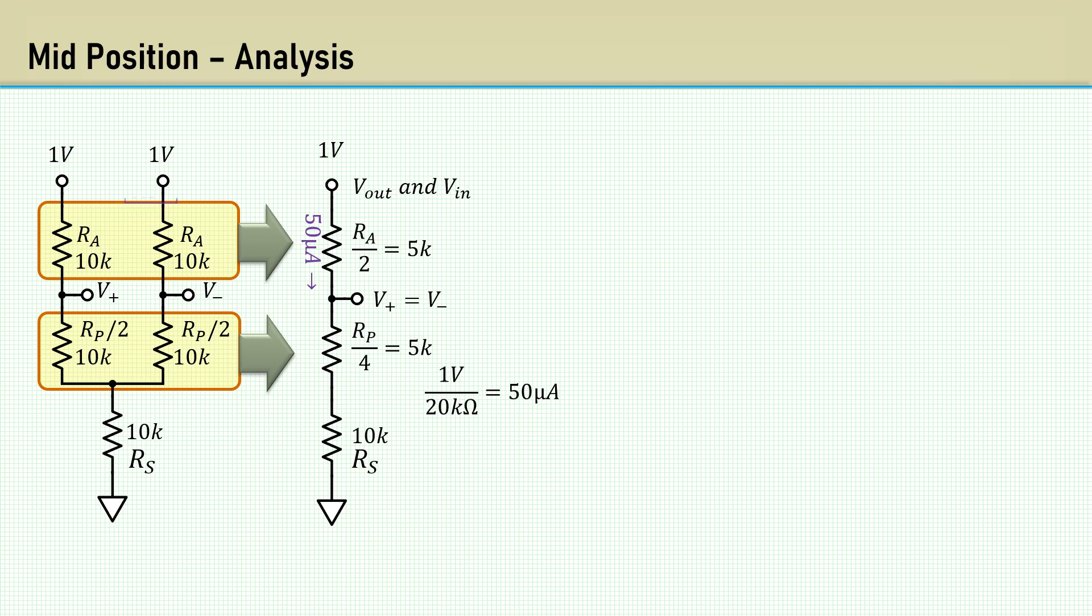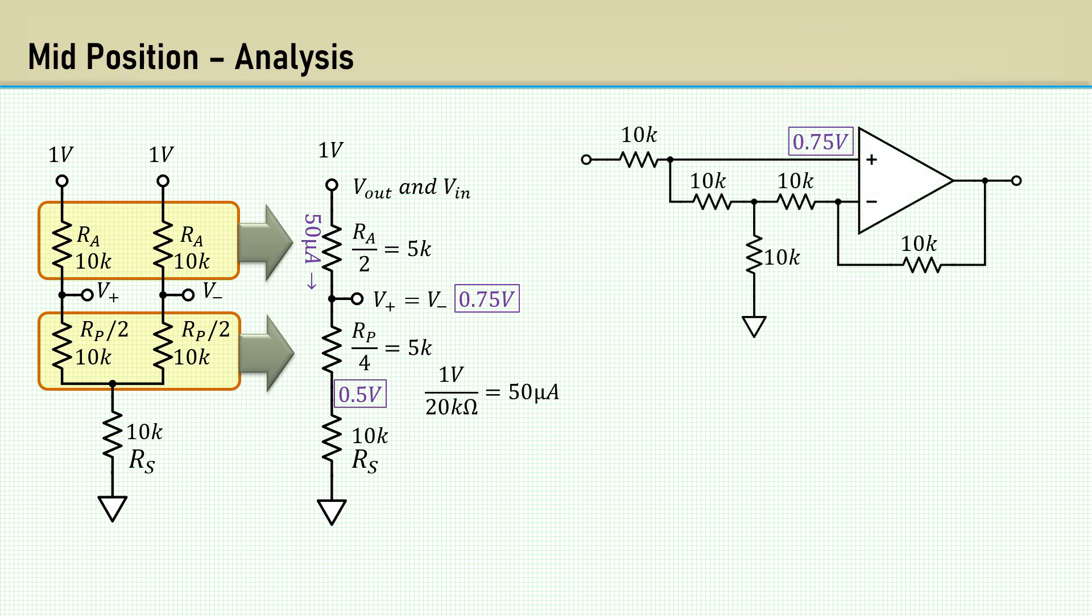Now we know that the voltage across RS is 0.5 volts, and the voltage at the V plus and V minus op amp inputs is 0.75 volts. Now we will draw it back into the regular form, and we can say 50 microamps splits into each side of the potentiometer at 25 microamps.